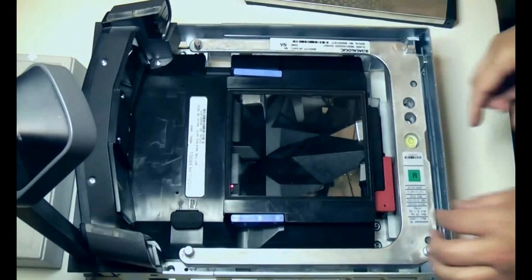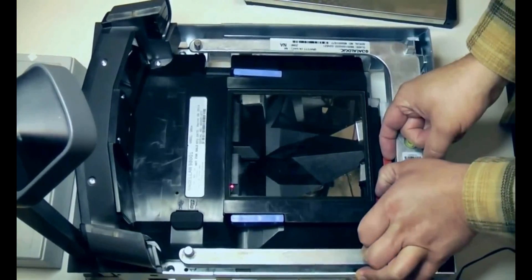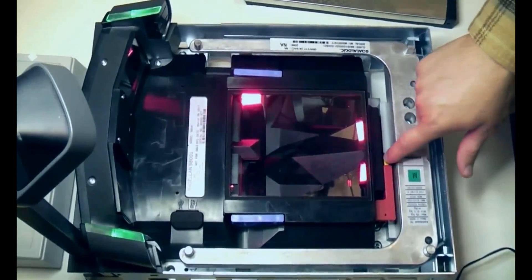Locate the calibration button which is located toward the front of the scanner. Slide the red plastic cover over to expose the calibration button.